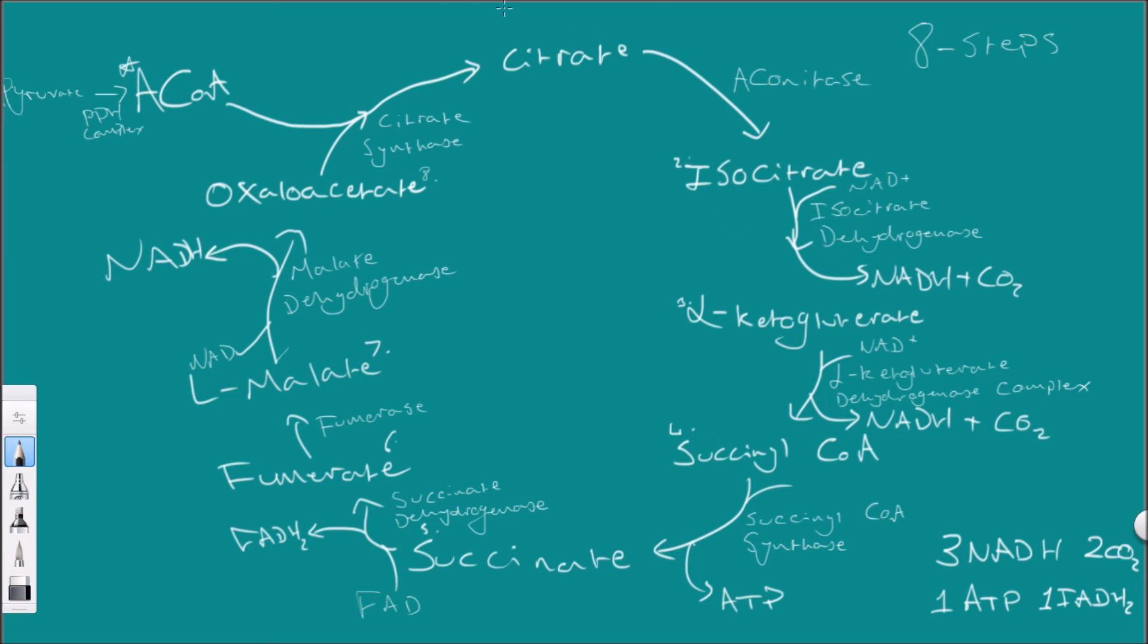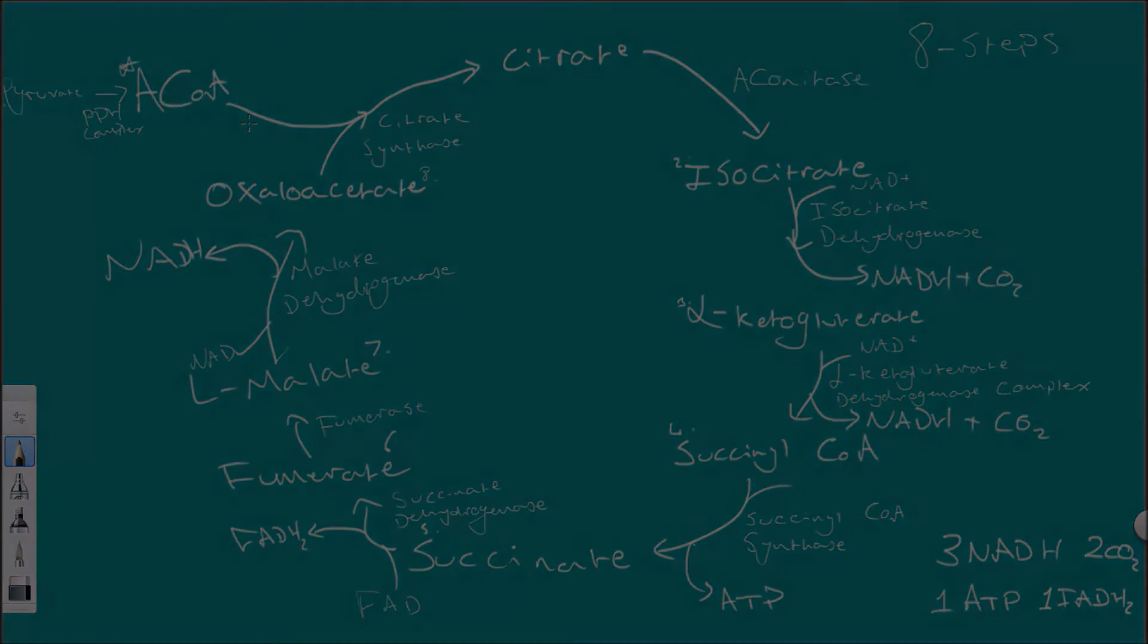Anyway, there's the Krebs cycle. Make sure to come back and learn about the electron transport chain and link reaction if you'd like to learn about this PDH complex converting pyruvate into acetyl coenzyme A. Stay pretty, you guys.